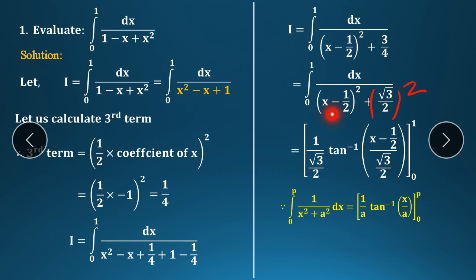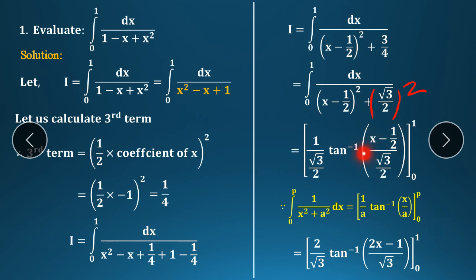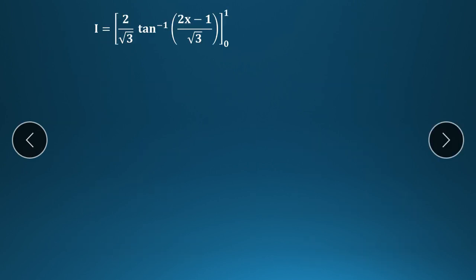So x means (x − 1/2) and a means √3/2. That square correction is noted. Next step: simplify — the 2 goes to the numerator, giving (2/√3) tan⁻¹[(2x−1)/√3] with limits from 0 to 1. The 2 in numerator and denominator cancel to give (2x−1)/√3.